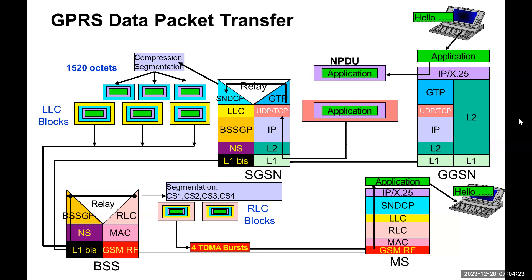SNDCP is a protocol application layer at the SGSN. SNDCP performs the key functions of compression and segmentation in order to meet the MTU — Maximum Transmission Unit — requirement of 1520 octets, for NPDUs over the frame relay network service layers on the Gb interface. SNDCP, after performing compression and segmentation, will classify the NPDU as a data PDU — either connection-oriented or connectionless. SNDCP headers are then added, which contain compression and segmentation information.